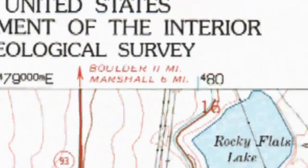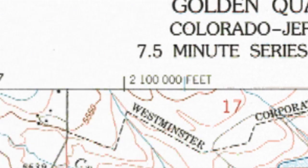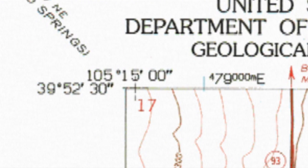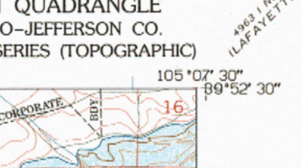Now move over to the northeast corner of the map. As before, the horizontal latitude is still 39 degrees, 52 minutes, and 30 seconds — we've indeed gone across the same latitude. The longitude should be different, though, and reads 105 degrees, 7 minutes, 30 seconds.